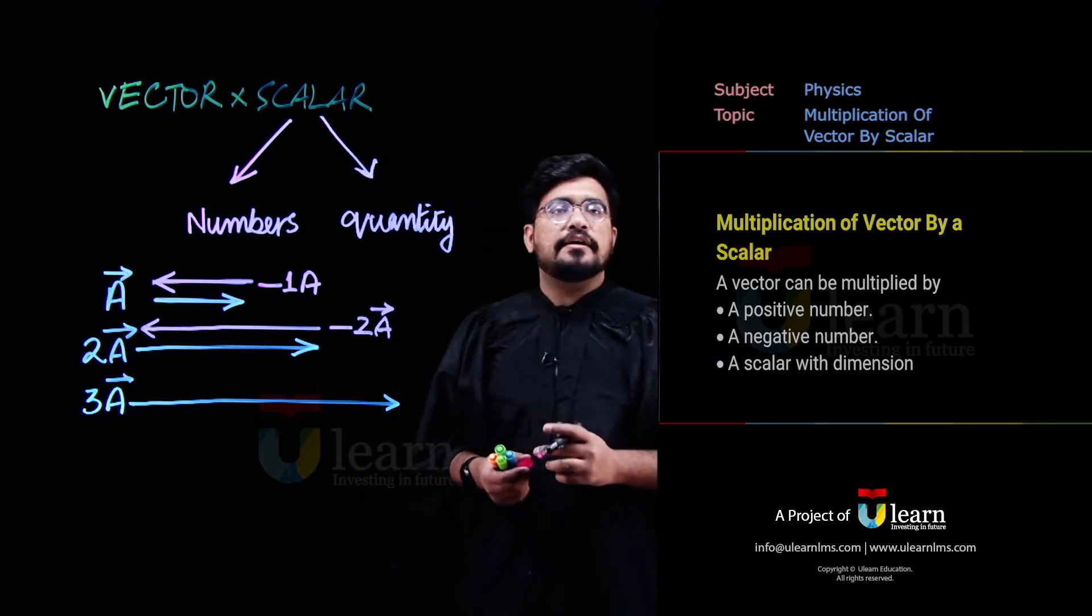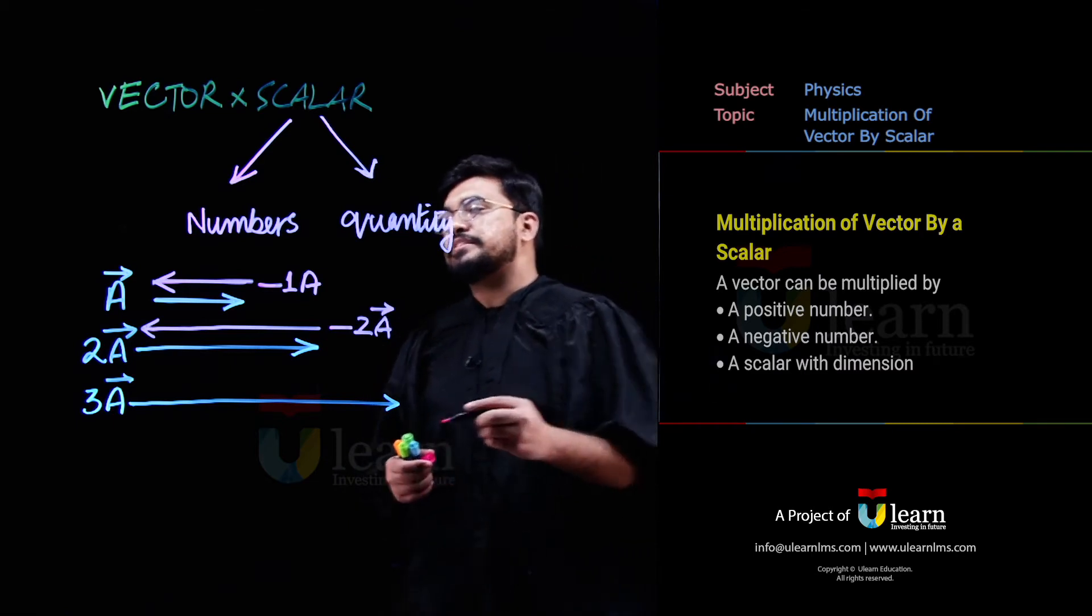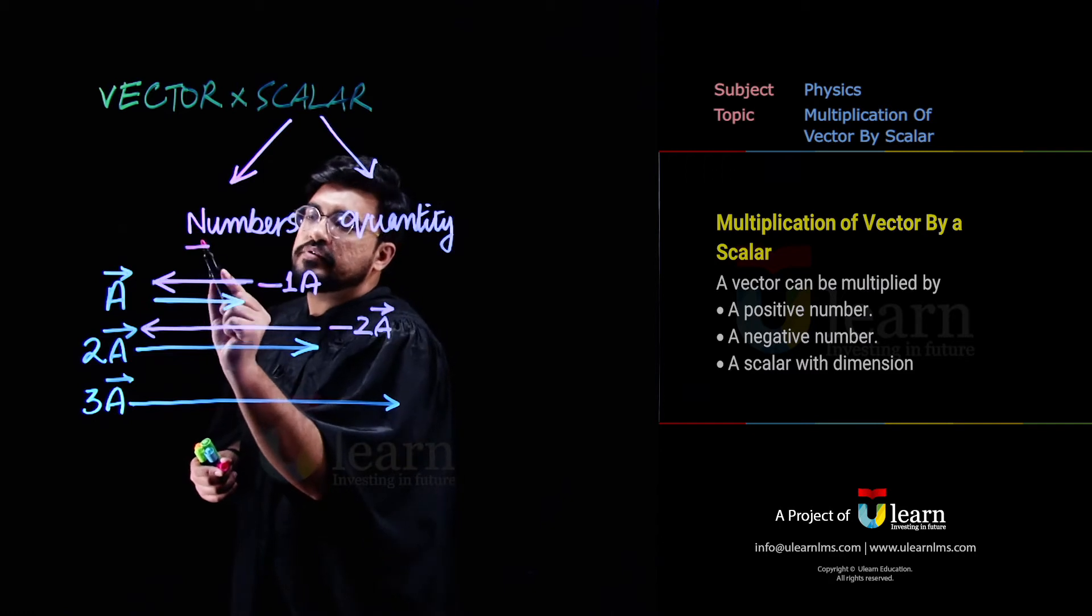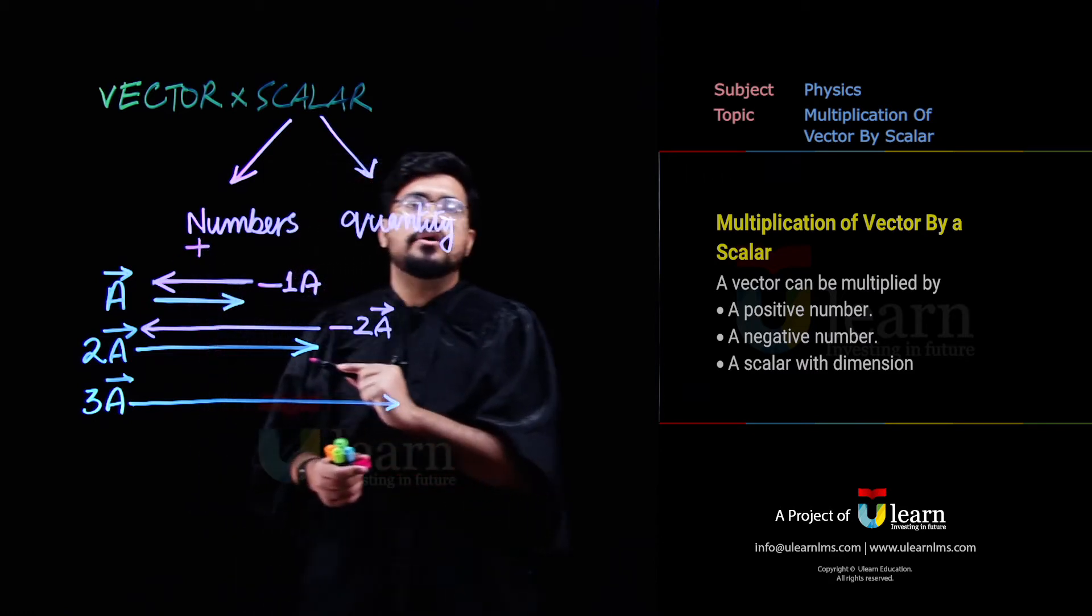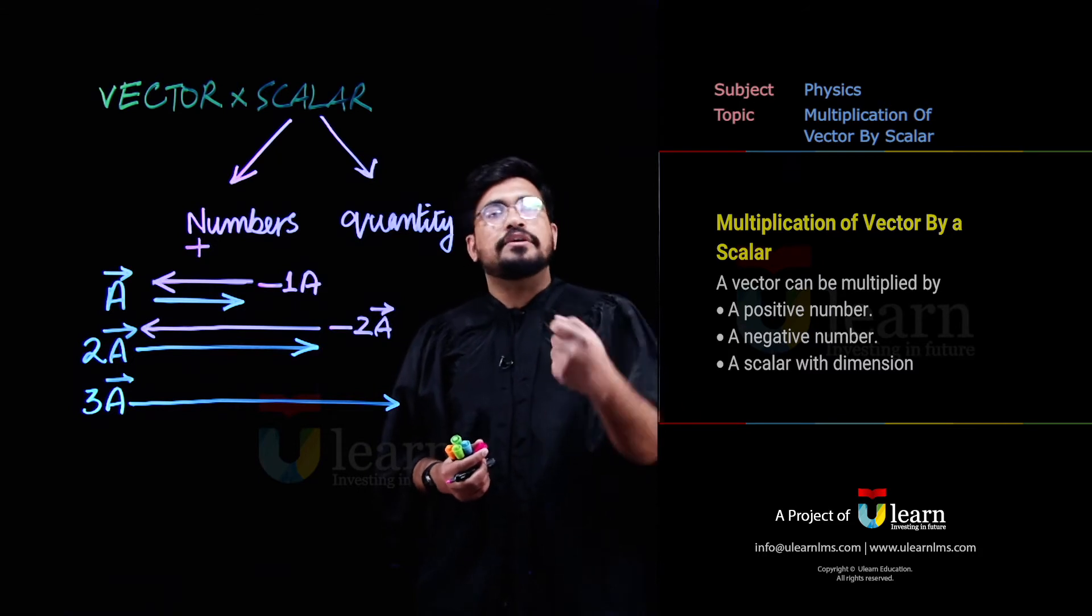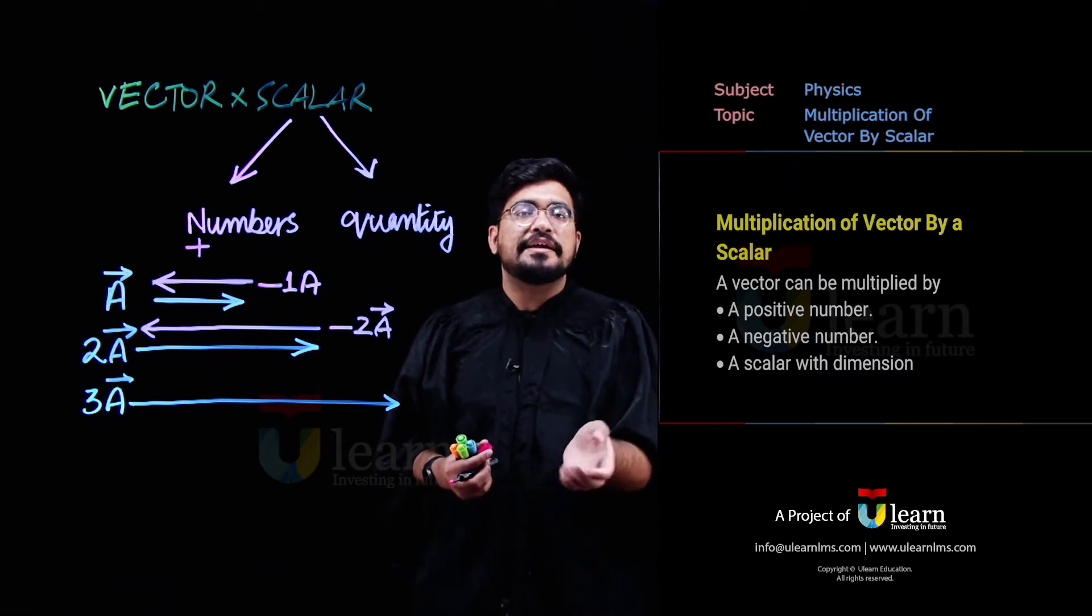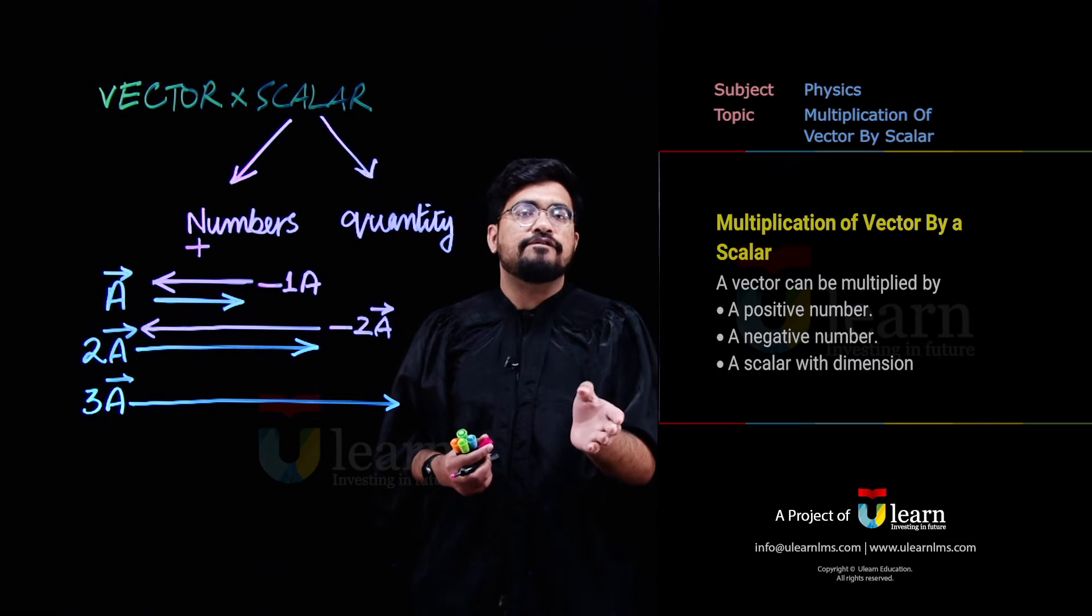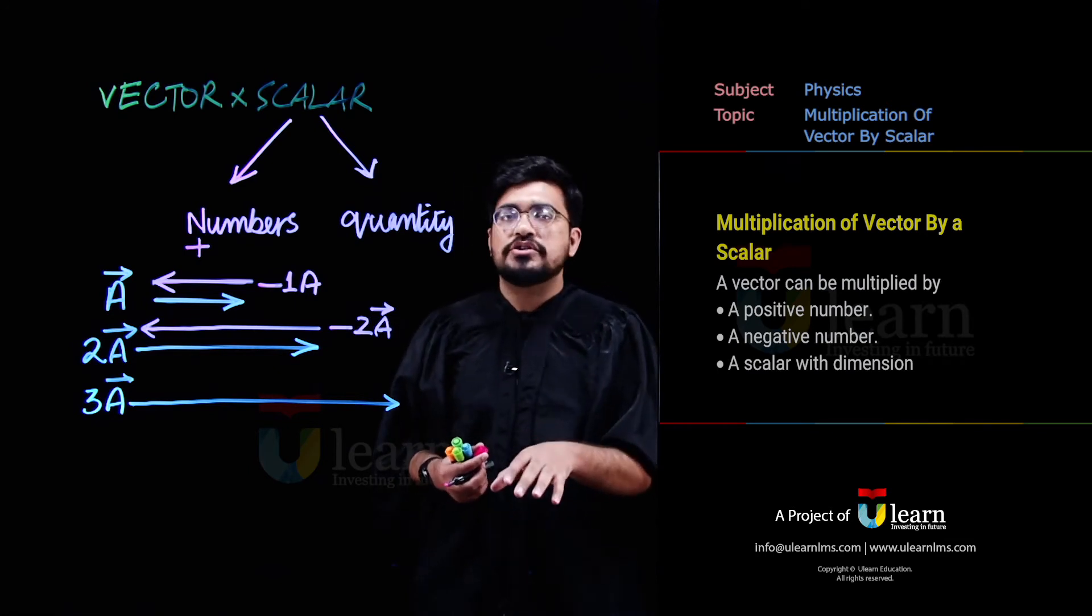Yahaan se hume ye pata chal raha hai, ke aap jab kisi vector ko ek positive scalar number se multiply karete ho, toh us vector ki magnitude number times increase ho jati hai, lekin uski direction pe koi fark nahi padta, vector itself uski nature change nahi hoti.